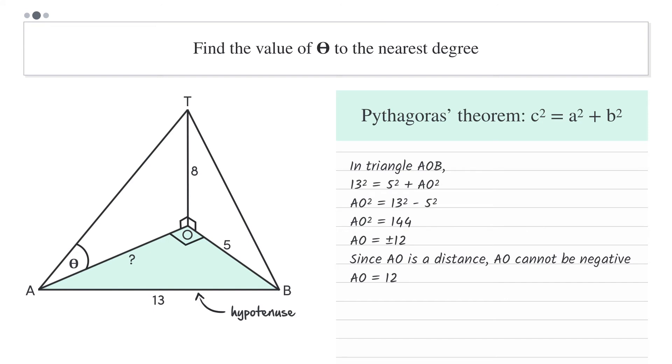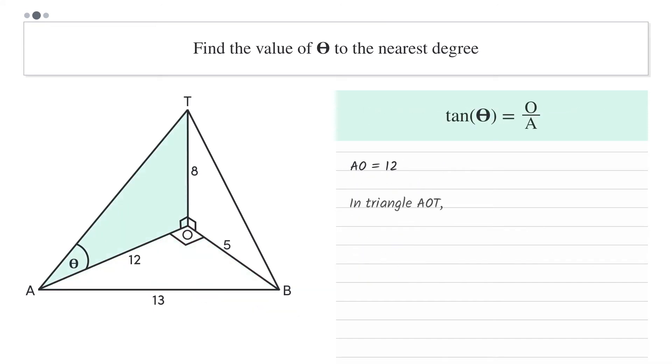Nice. Now let's shift our attention to triangle ATO. We already said that we're going to use tan to find theta because we have the lengths of the opposite and adjacent sides. So, tan theta equals opposite over adjacent, which equals 8 over 12.